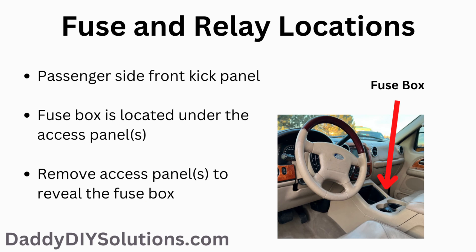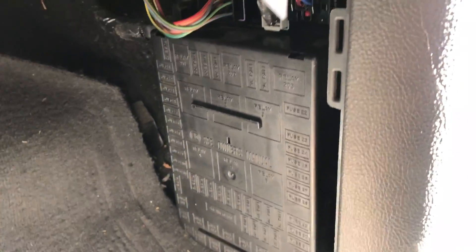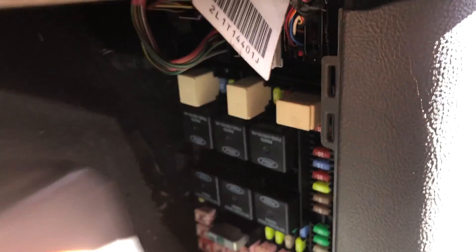In order to locate the fuse box, locate the passenger side front kick panel. The fuse box is located under the access panel. Remove the access panel to reveal the fuse box.